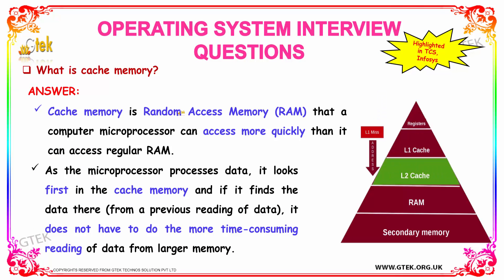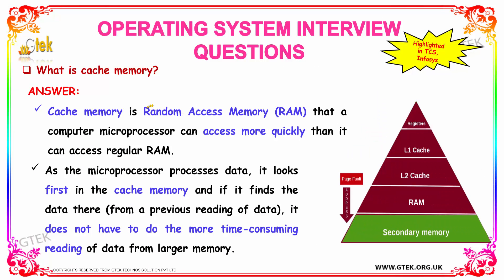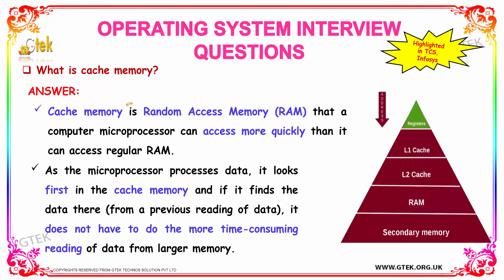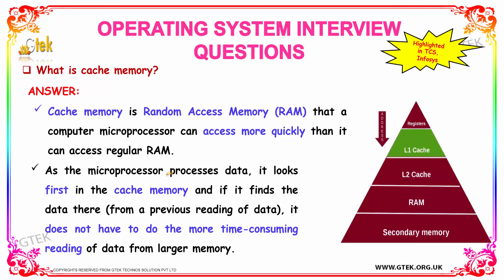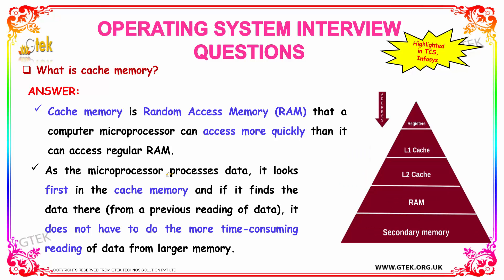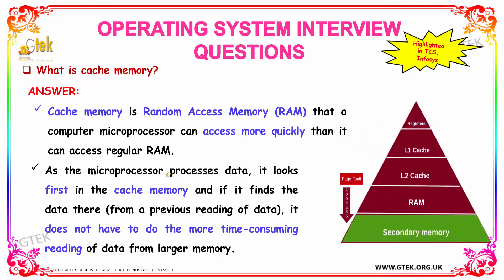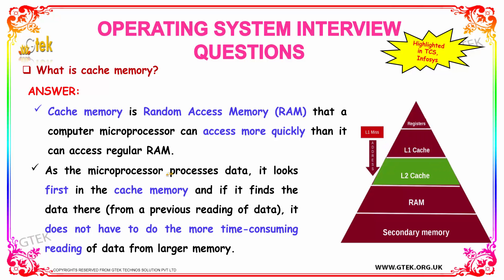What is cache memory? Cache memory is a RAM that the computer microprocessor can access more quickly than regular RAM. As the microprocessor processes data, it looks first in the cache memory. If it finds the data there, it does not have to do the more time-consuming reading of data from a larger memory. So you can easily access your data from the cache memory.